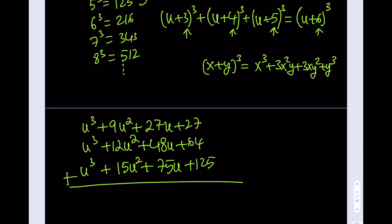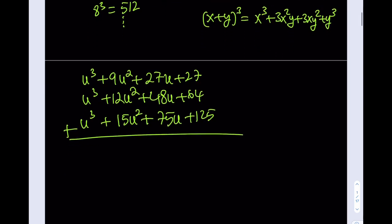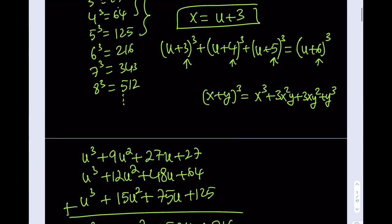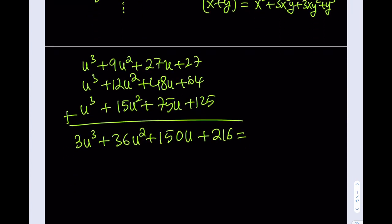That's going to be u³ + 15u² + 75u + 125. And as you know, the sum of these three things is going to equal what? Let's add those first. That's going to give me 3u³ + 36u² + 150u + 216. And on the right hand side, I do have (u+6)³. So let's write that down here. That's going to be u³ + 18u² + 108u + 216.